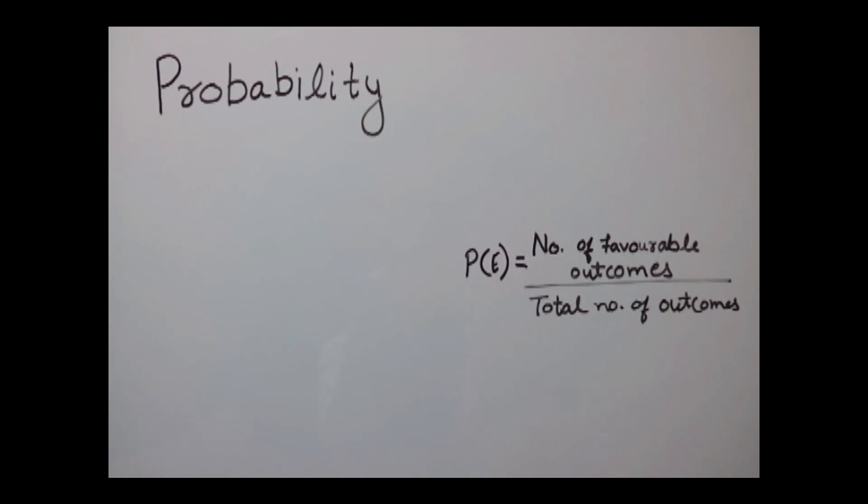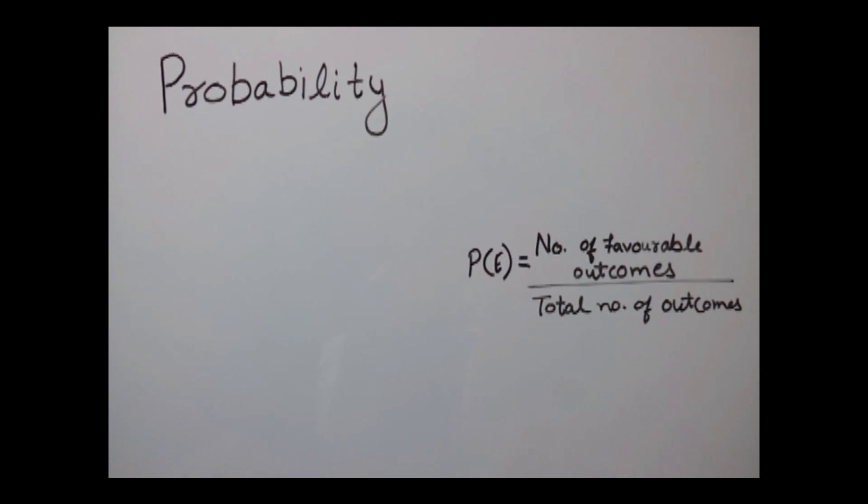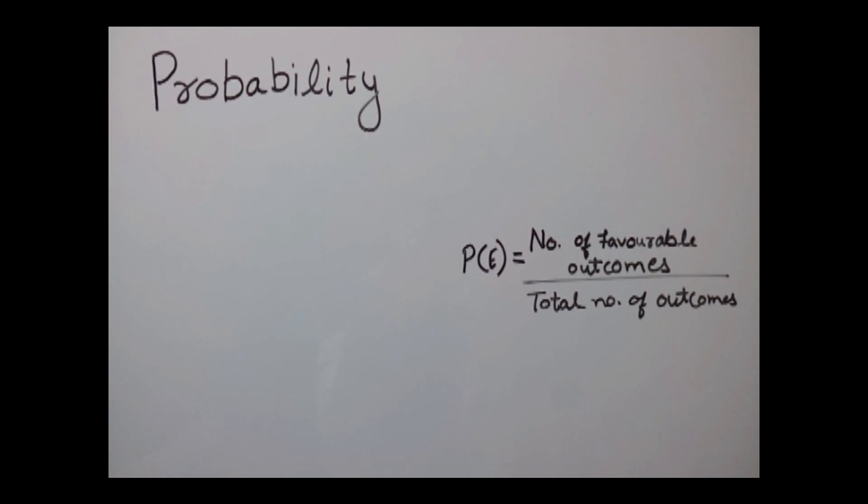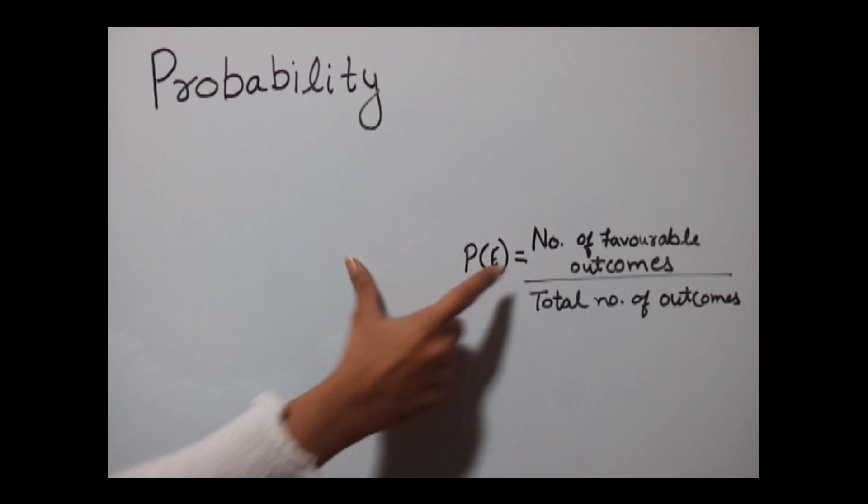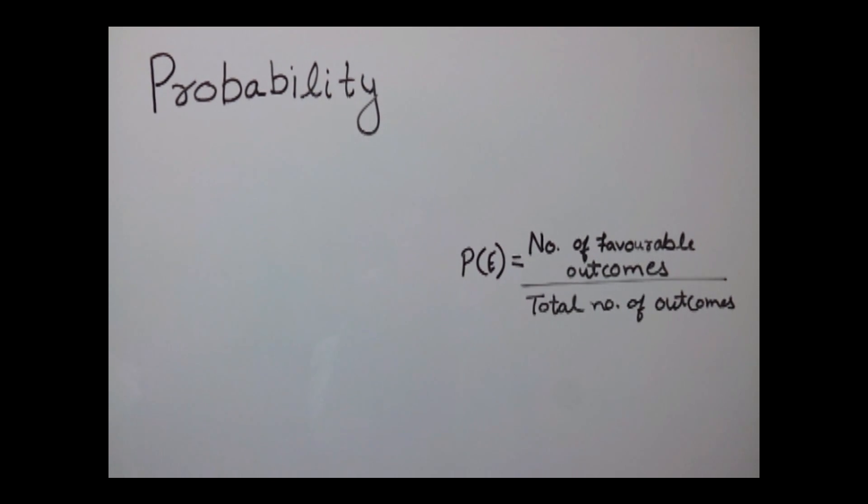Let's discuss what a probability is. A probability is the chance of getting something done. In probability, we find out the chances of an event to occur. The basic formula of probability is number of favorable outcomes divided by total number of outcomes.